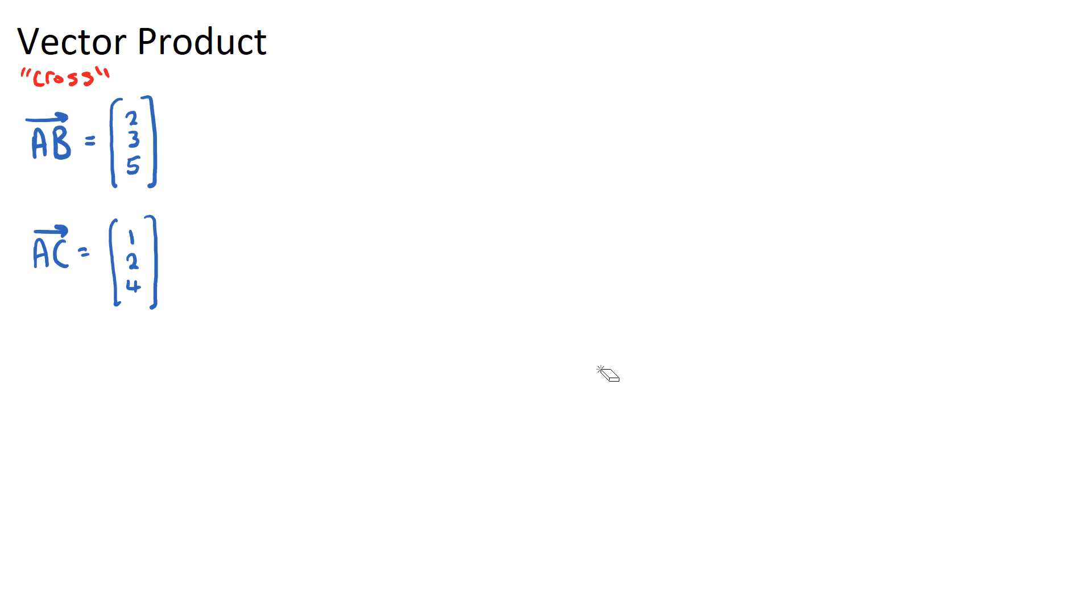So let's go ahead and do that. If I want to find AB cross AC, the vector product of these two, we want to set up this matrix. We put a line here, and the top row we put i, j, and k. Our second row needs to be the first vector in our vector product equation, AB. So it'll be 2, 3, and 5. And then the last row, the third row will be the second vector in our vector product, AC, which is 1, 2, and 4.